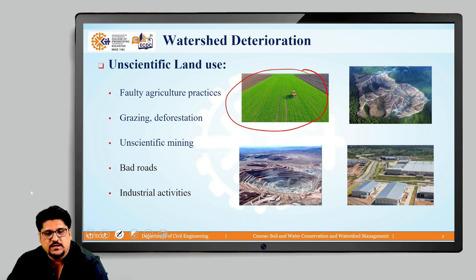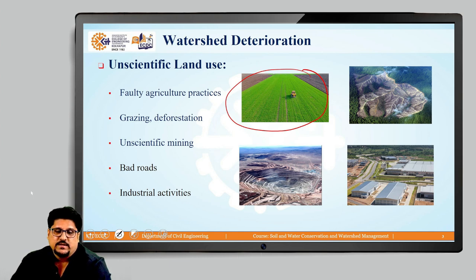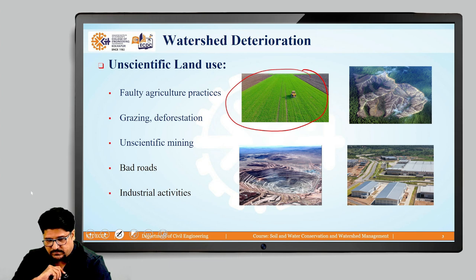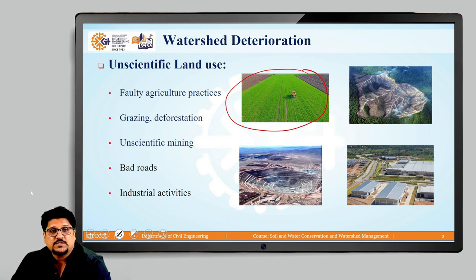Another issue concerns forests and grasslands. If uncontrolled deforestation is happening within the watershed, or issues like forest fire occur, that can lead to a reduction in the forest area. Similarly, if uncontrolled grazing is done within a watershed without any appropriate management practices, whatever grassland is available will get reduced and will not be available for cattle.